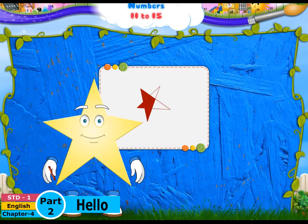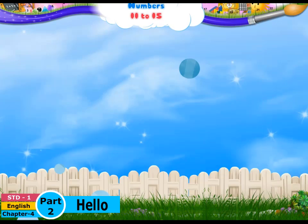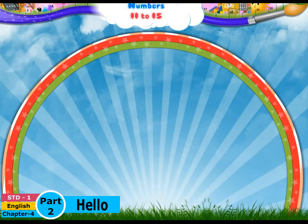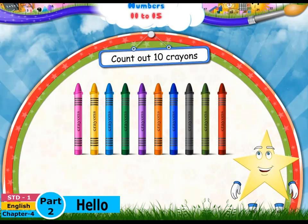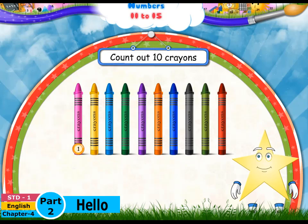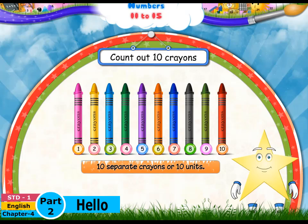Study, coloring again! You really like these crayons. Shall we do some counting with your crayons? Look, let's count out ten crayons: one, two, three, four, five, six, seven, eight, nine, ten. That's ten separate crayons, or ten units.